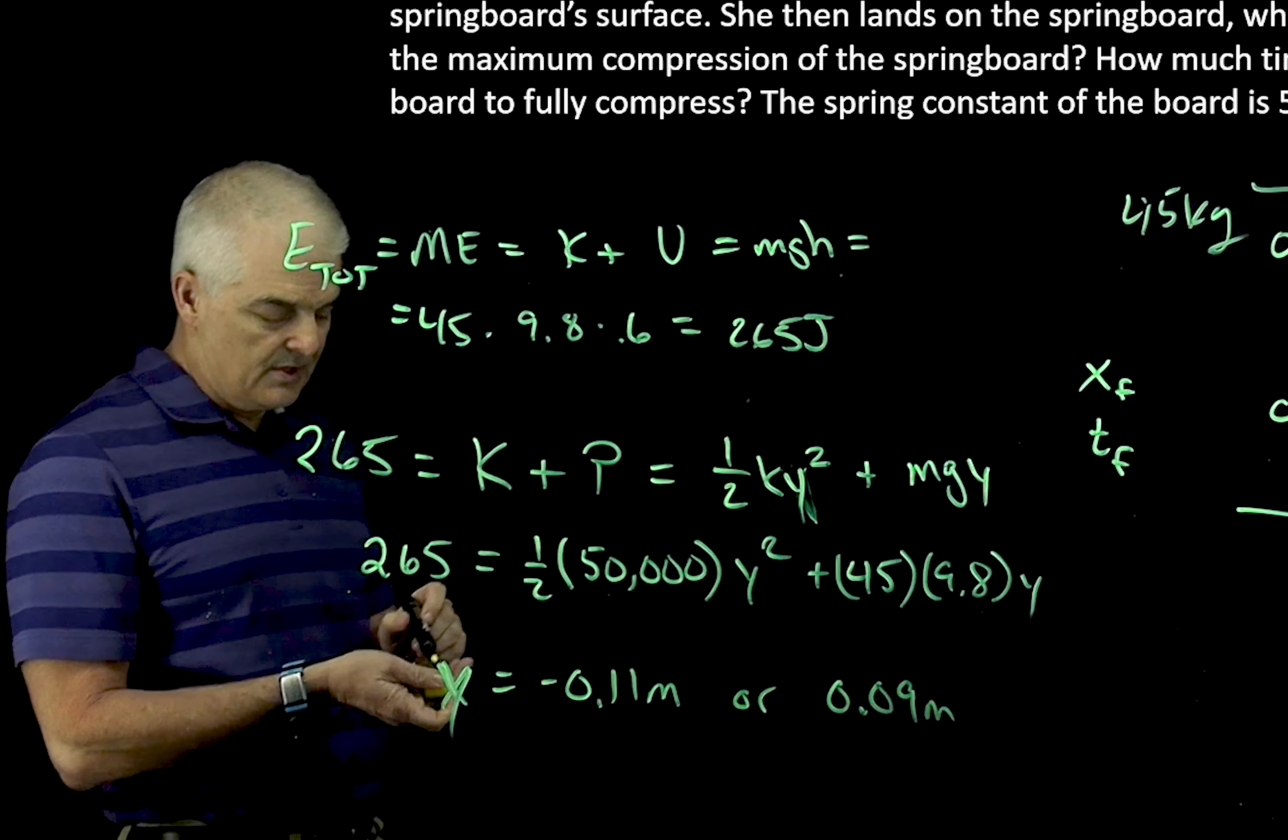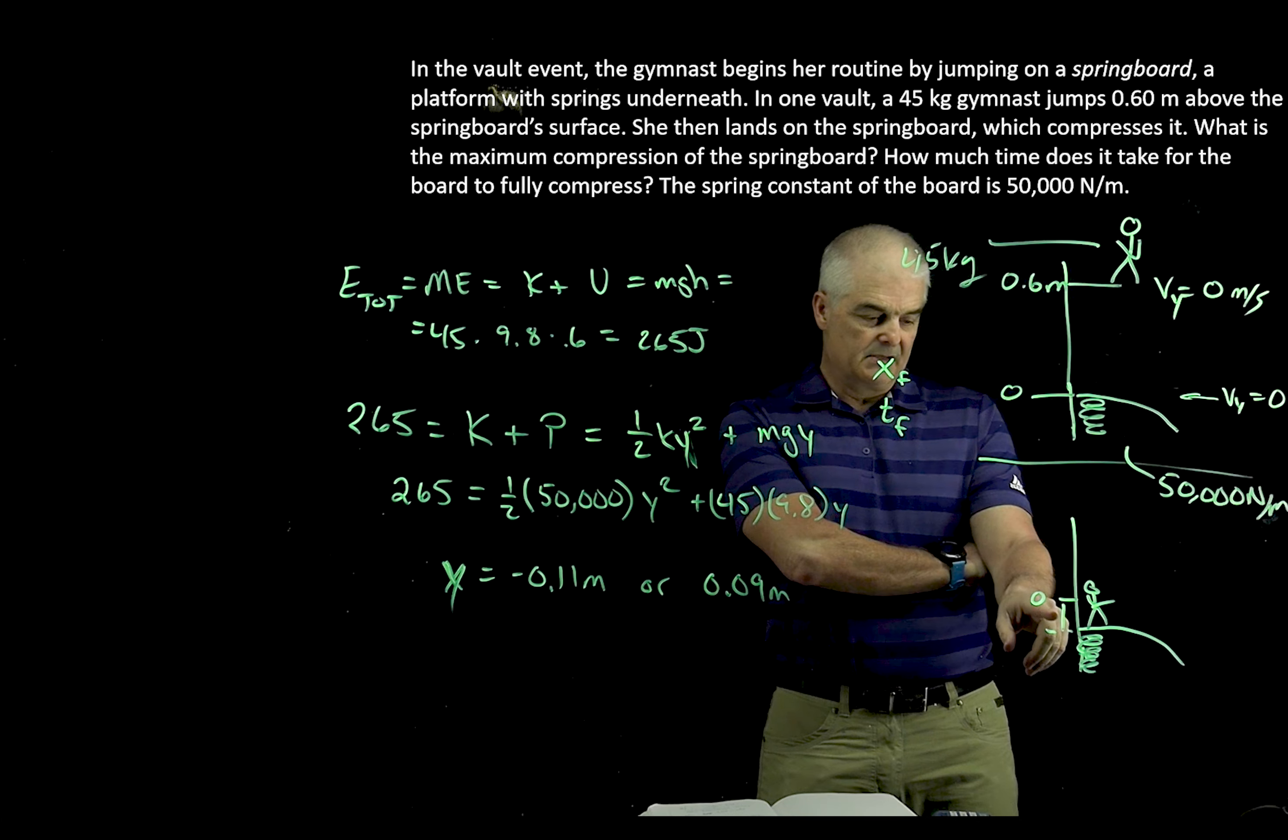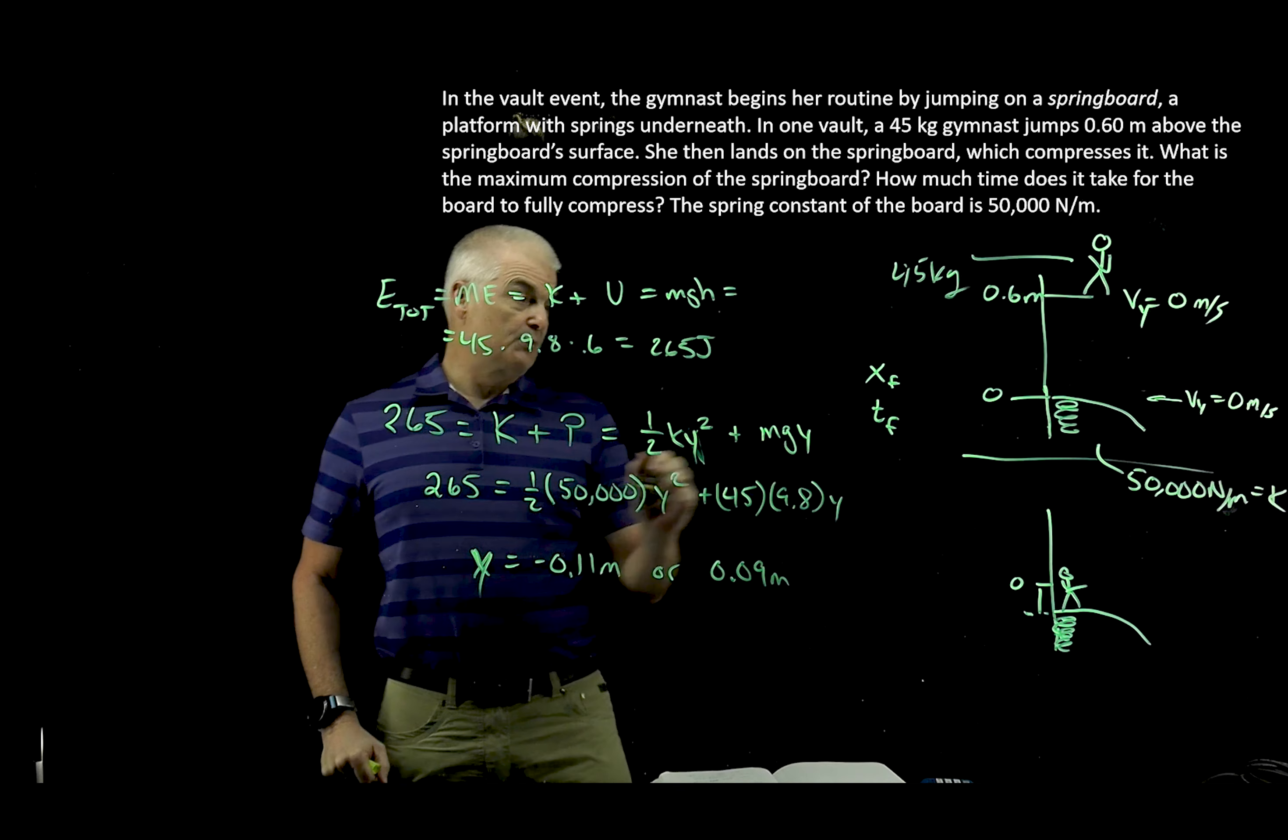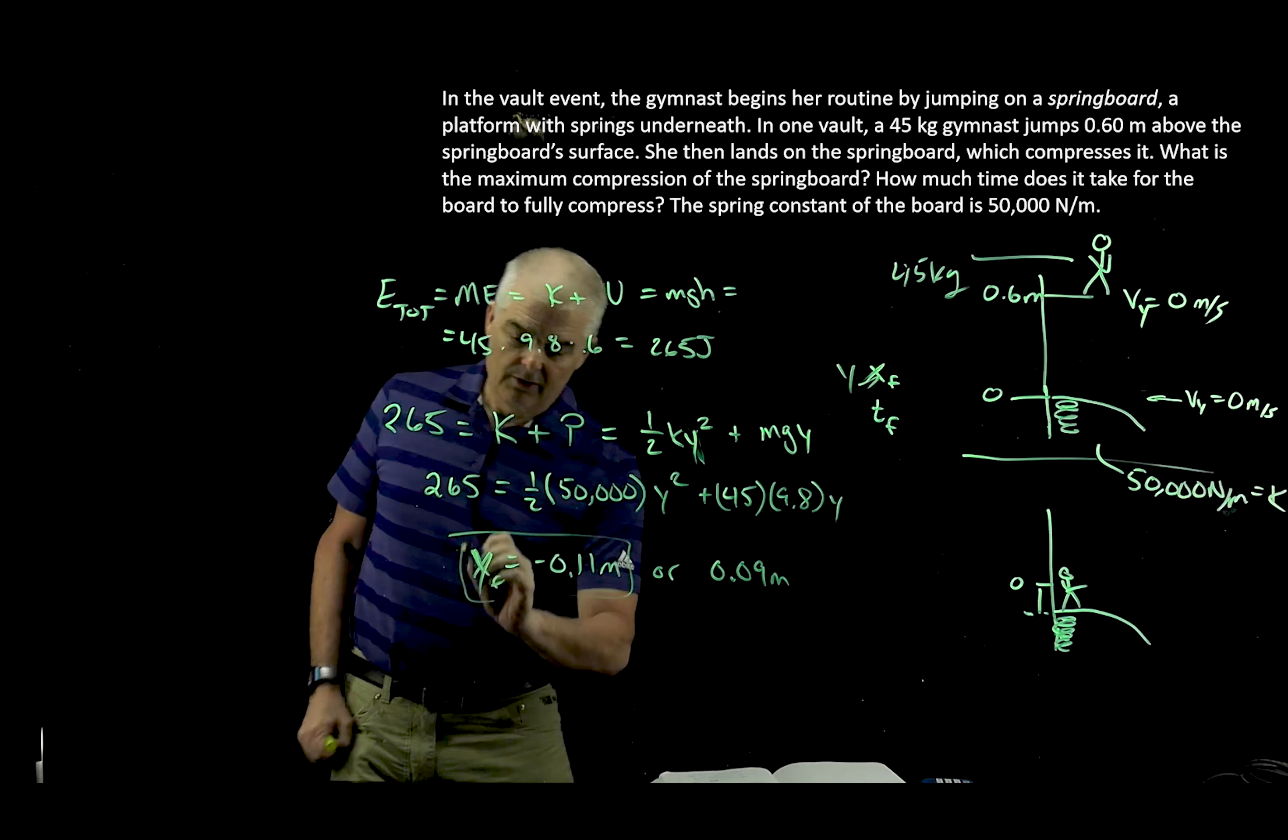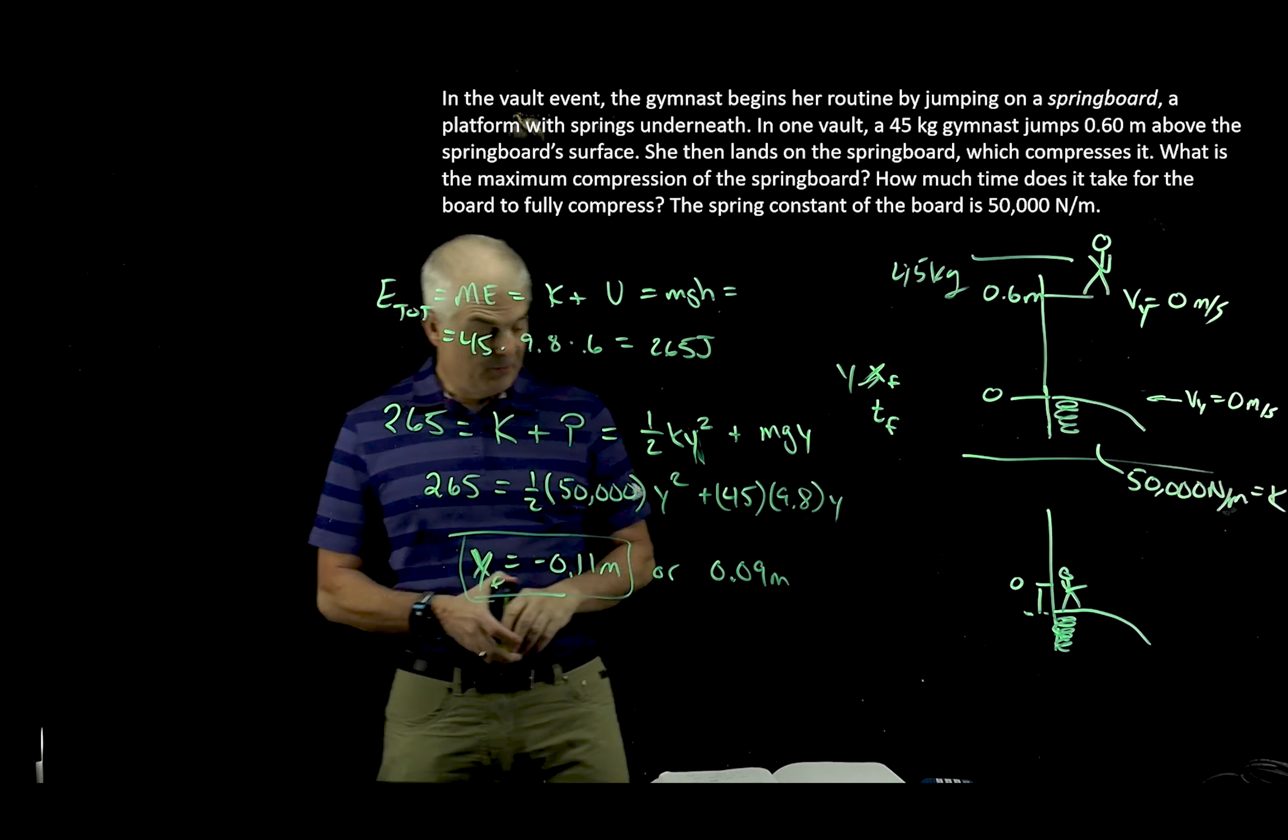I find on my calculator that y is equal to either negative 0.11 meters or 0.09 meters. Which one of these two numbers makes sense in light of this problem? Is it negative 0.11 or 0.09? If this is our zero mark, it is depressed underneath. So what's the answer? The negative answer. So the answer to the first part, the yf, the final y, is it's going to be lowered by 0.11 meters. And that is how we answer part a.